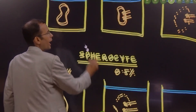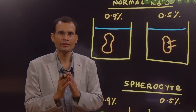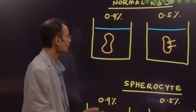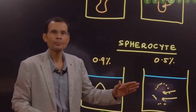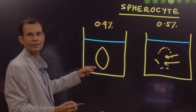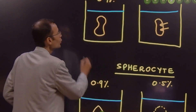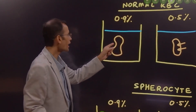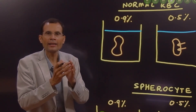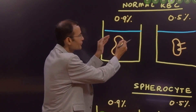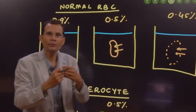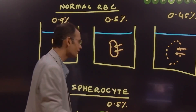Now, a normal RBC is biconcave shaped, and this biconcave shape offers a greater surface area. Compare that with a spherocyte. If water were to enter the RBC of a normal biconcave shape, the RBC will swell up gradually and finally the membrane will be lysed or broken down.